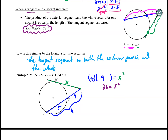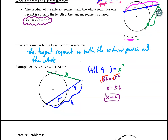Taking the square root of both sides, X equals plus or minus 6. Since a negative length isn't possible in geometry, X equals 6. So MA equals 6. Always go back and make sure you've answered what was actually asked — in this case, MA equals 6.